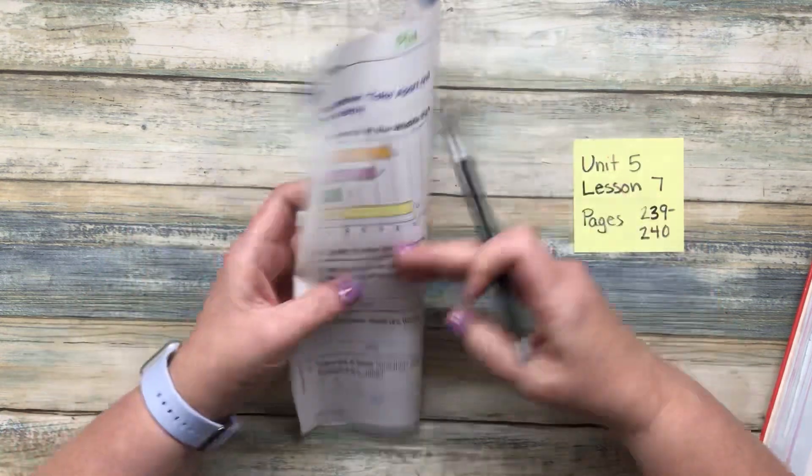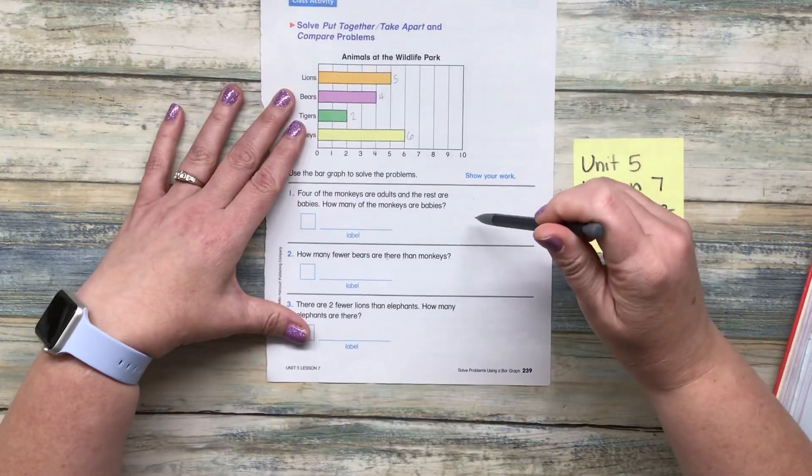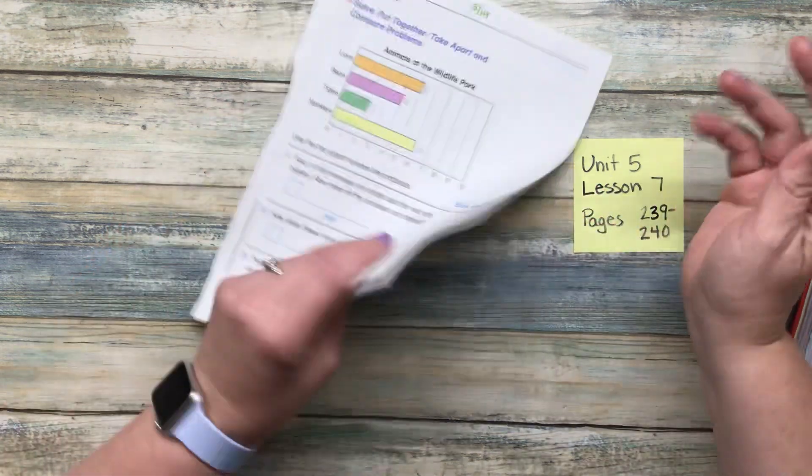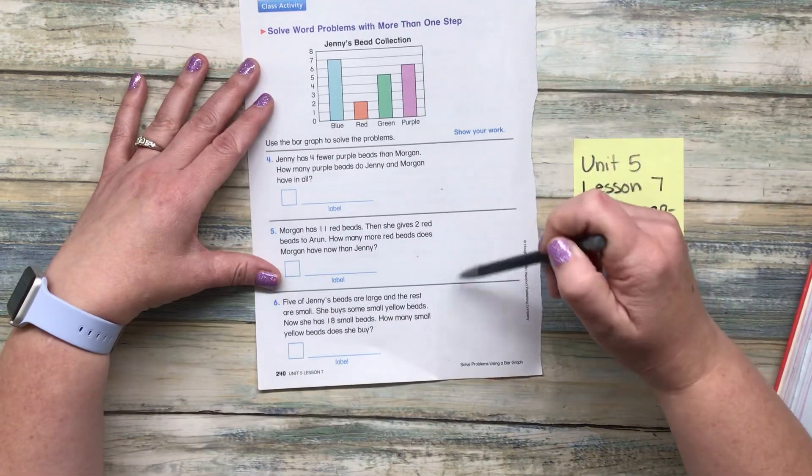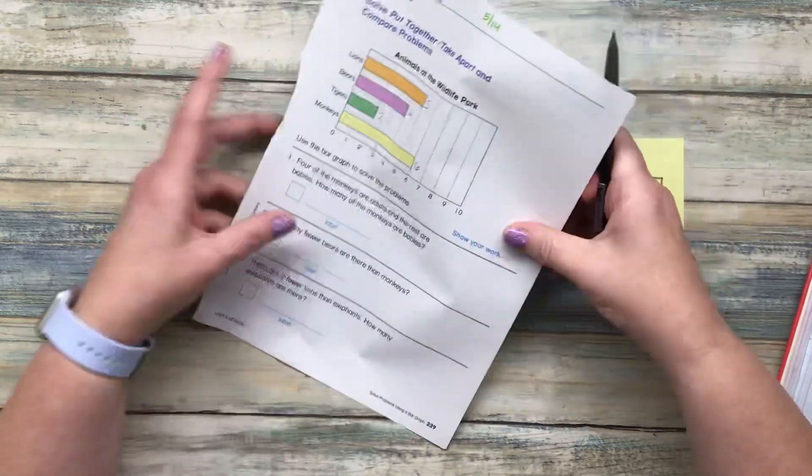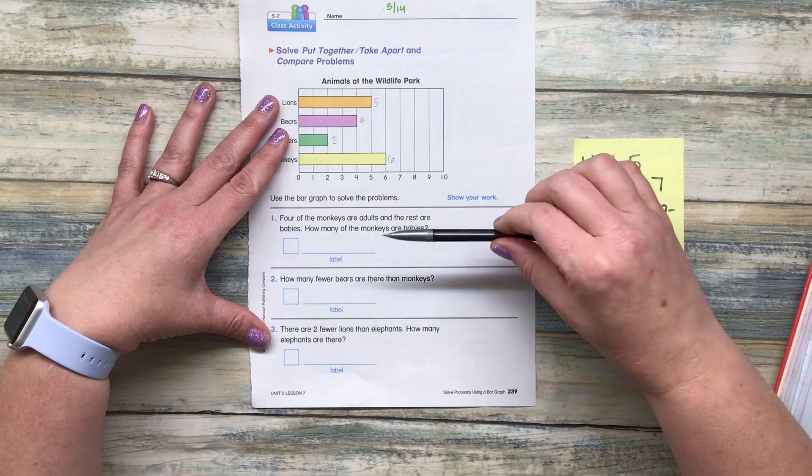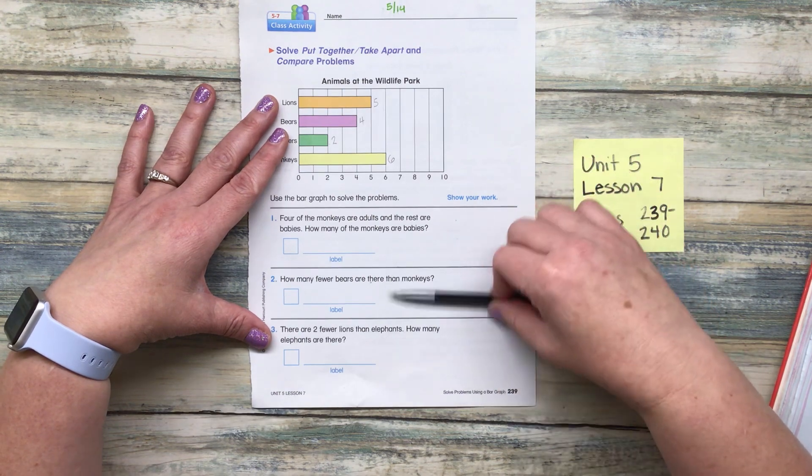Maybe what I'll do is we'll do one of these together, two on your own, one of these together, two on your own. Let's go ahead and do it that way. So instead of I do, we do, you do, this will be kind of I do, we do, and then you do, and I'll read them to you.